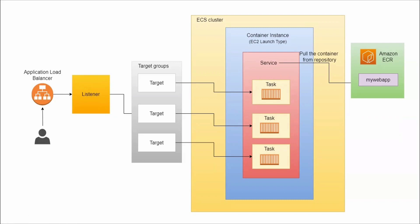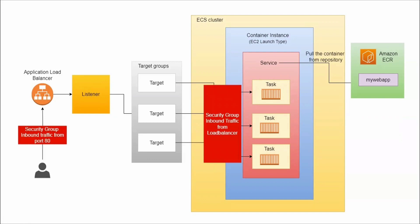For configuring the Application Load Balancer, we require security groups — one at the entry point where traffic comes into the ALB, and another for when the target groups are associated with the tasks. We need to create these two security groups before we create our cluster and Application Load Balancer.